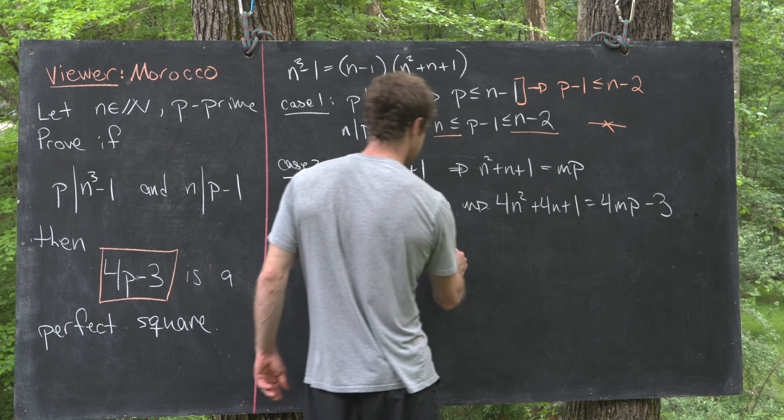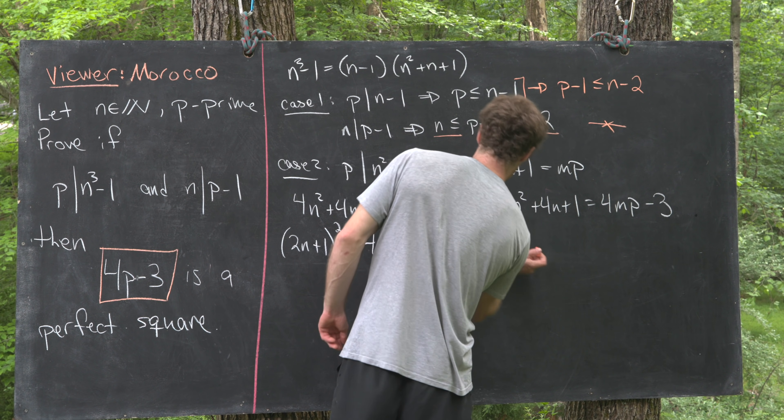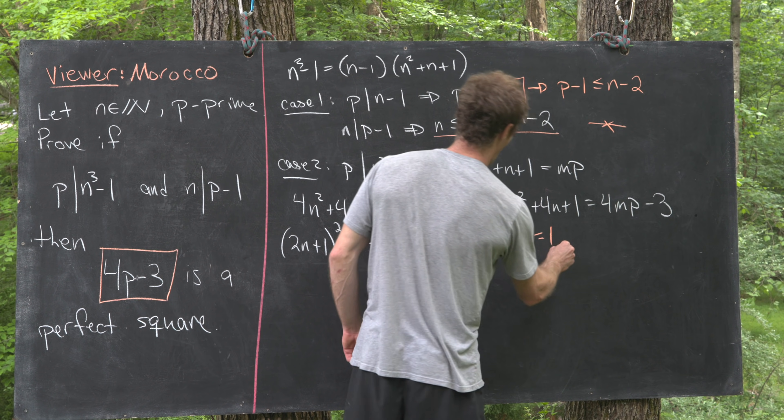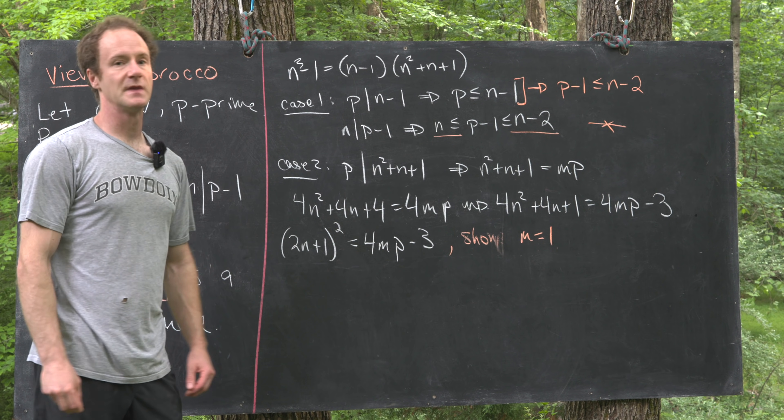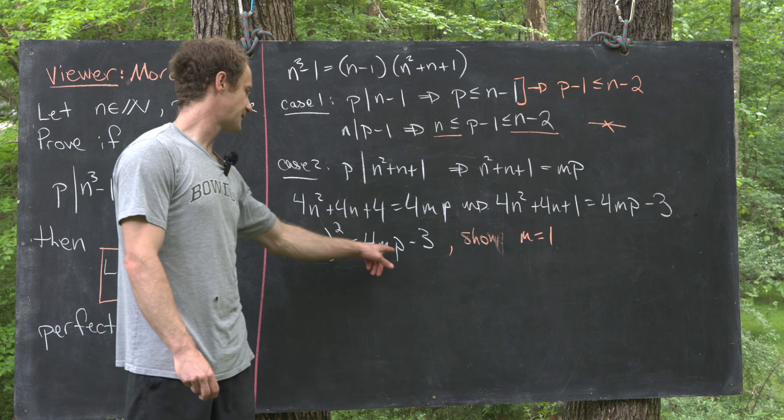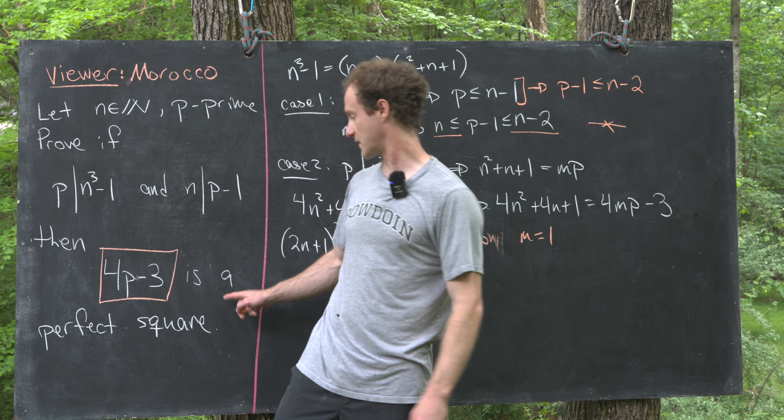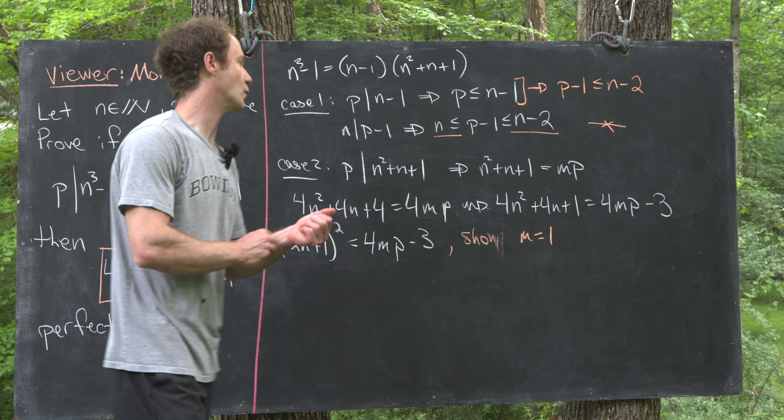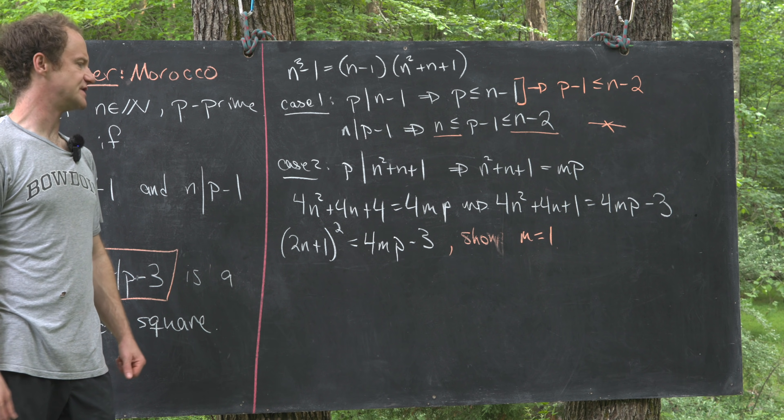So that means all that's left to show is that m can only be equal to 1. And if m can only be equal to 1, that means 4p-3 is a perfect square, which is exactly what we want. So let's see how we could do that.